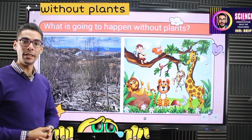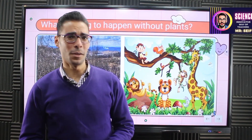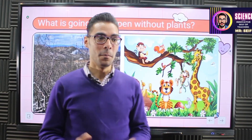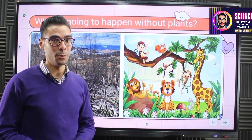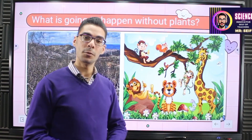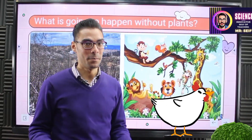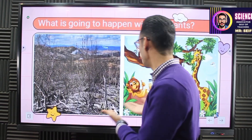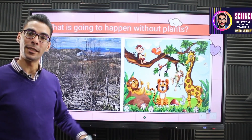The plant is really important — it's a kind of food for us. But even if you don't like vegetables or fruits, they are important because they are the source of food for animals such as chicken and cows, which are your food. Also, the plant is really important because it produces oxygen, the gas that we need to breathe.